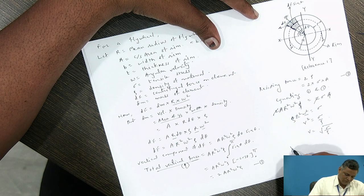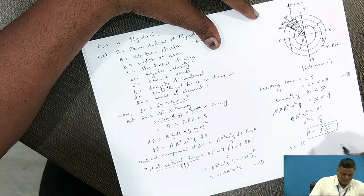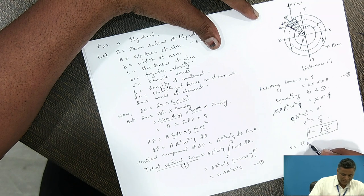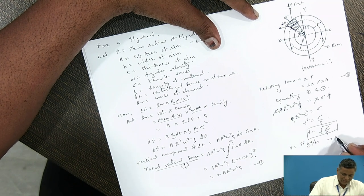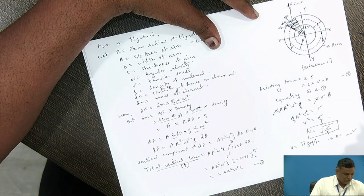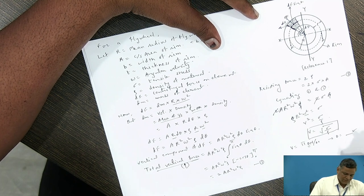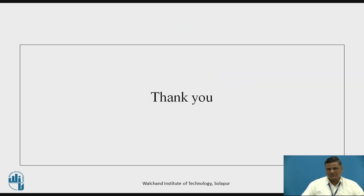Also, v equals π·d·N divided by 60. From this, the diameter of the flywheel can be determined. These are the references used. Thank you.